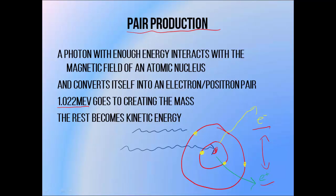A photon can also interact with the electromagnetic field of an electron. This results in the creation of an electron-positron pair which goes shooting away from the interaction site, and it imparts kinetic energy to the electron that was hit by the photon, sending it shooting away from the interaction site itself. This results in three particles emerging from the interaction, so this is called triplet production, which is much more rare than pair production.